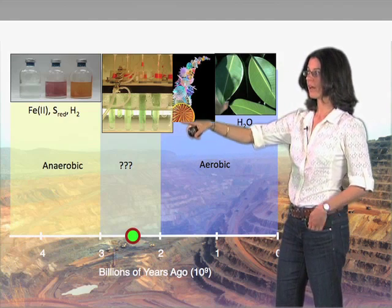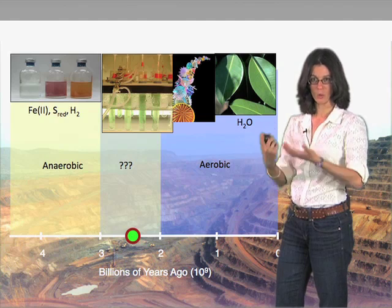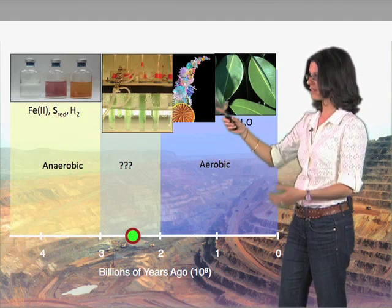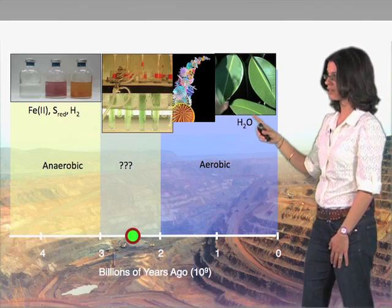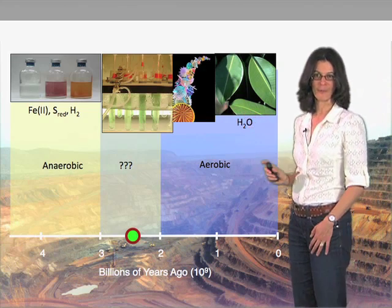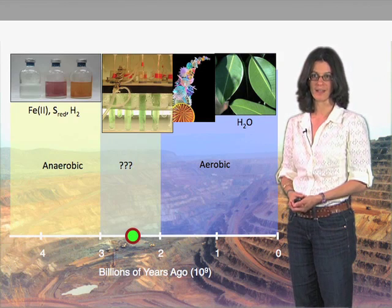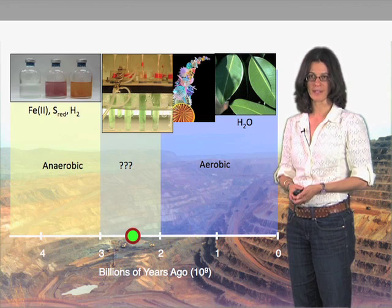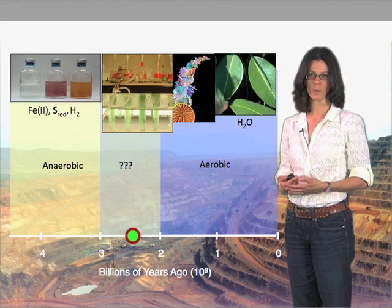...which in turn are what became the plastids — the chloroplasts that we find in modern marine algae, and also of course in plants that are very well known for their ability to do oxygenic photosynthesis — we do not know when this happened. In my third lecture in this series, I will discuss ways that we can begin to approach this problem.